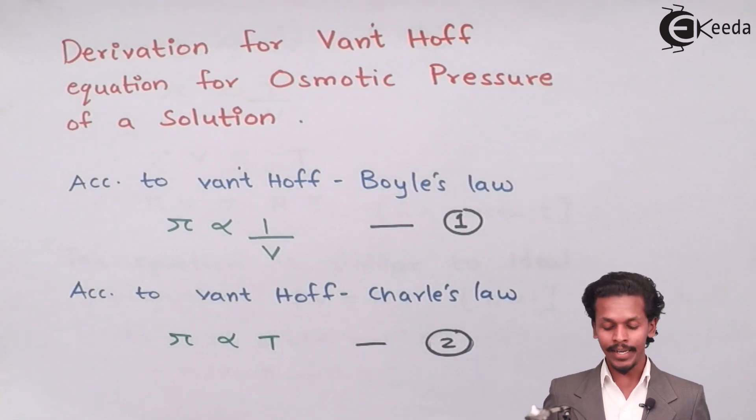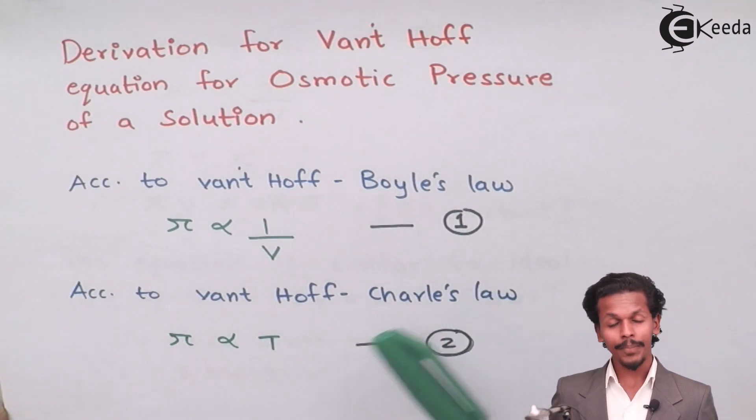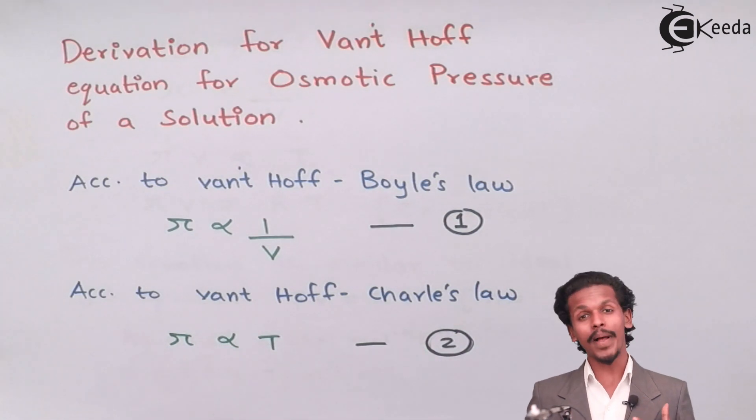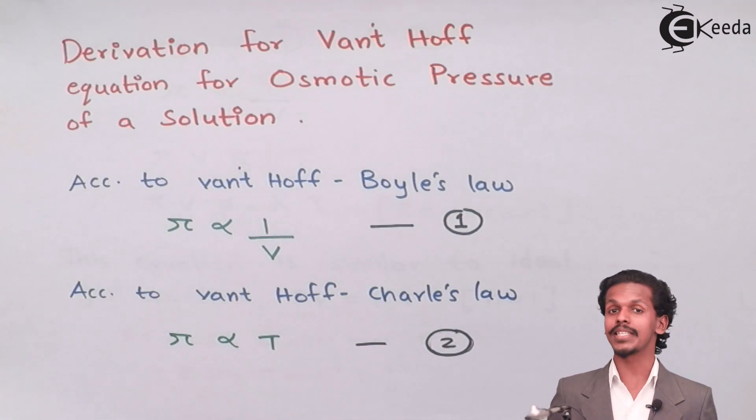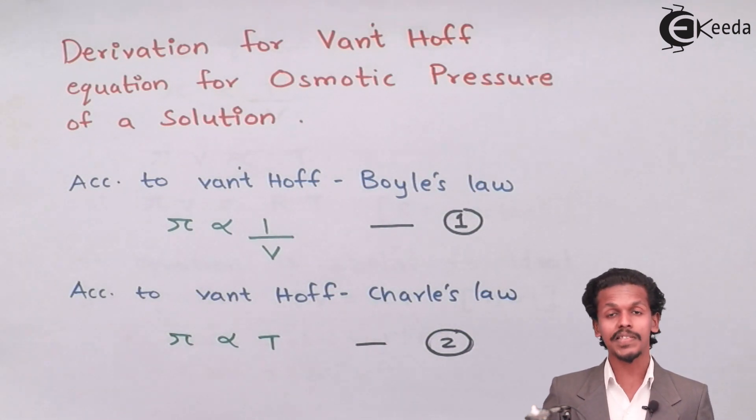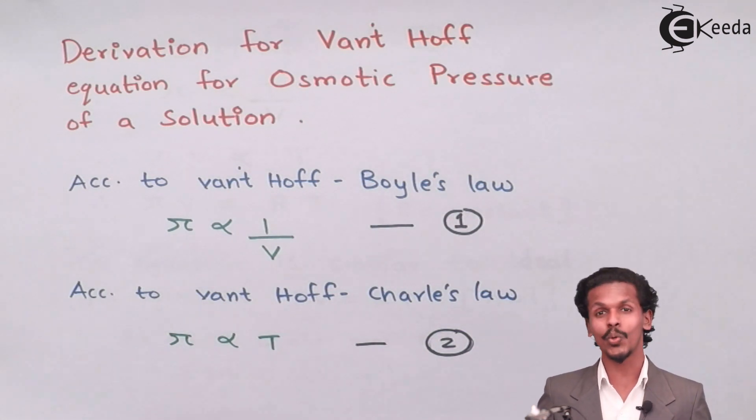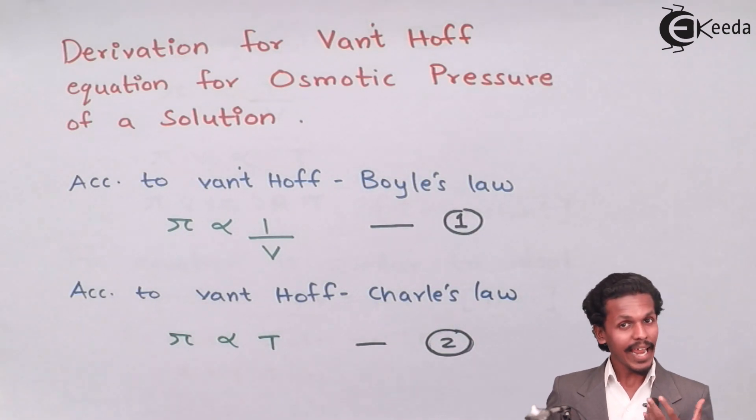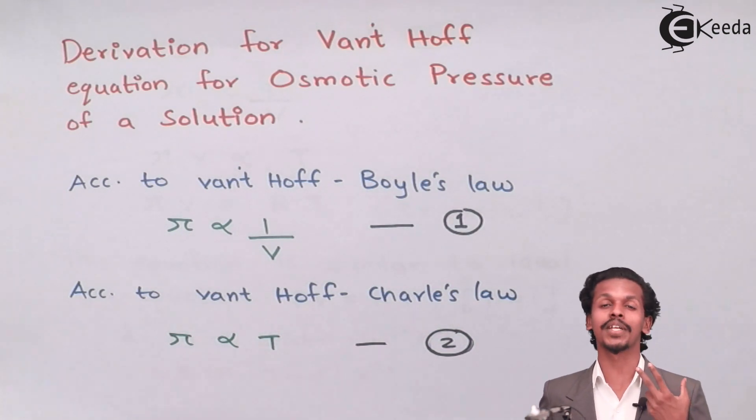According to Van't Hoff-Charles law, osmotic pressure π is directly proportional to temperature T, meaning as temperature increases then the osmotic pressure will also increase. We will mark this as equation number two.